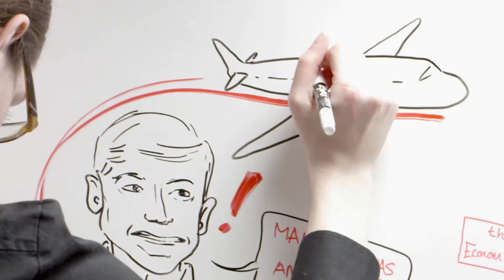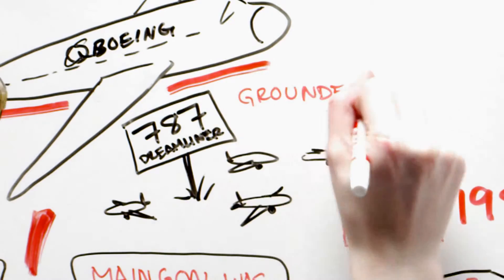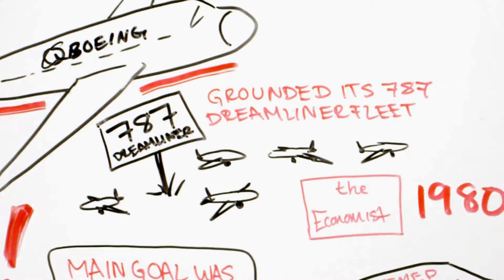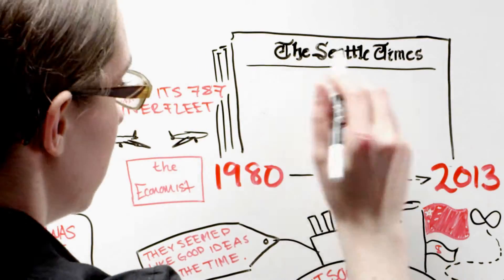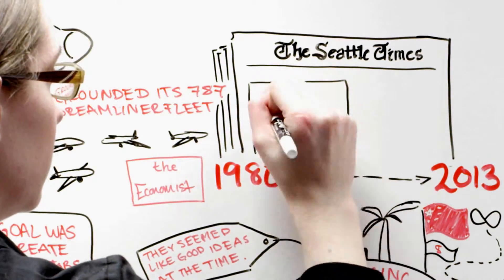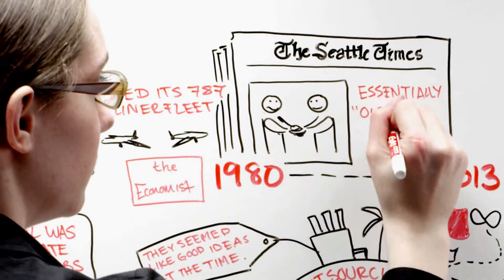Then there's Boeing, the poster company for outsourcing gone bad. The aerospace giant's saga of flawed batteries has grounded its 787 Dreamliner fleet until a fix can be found. According to the Seattle Times, the likely culprit is the hands-off structure of this round of outsourcing, where the company contracted with about 50 top-tier suppliers and essentially outsourced responsibility.